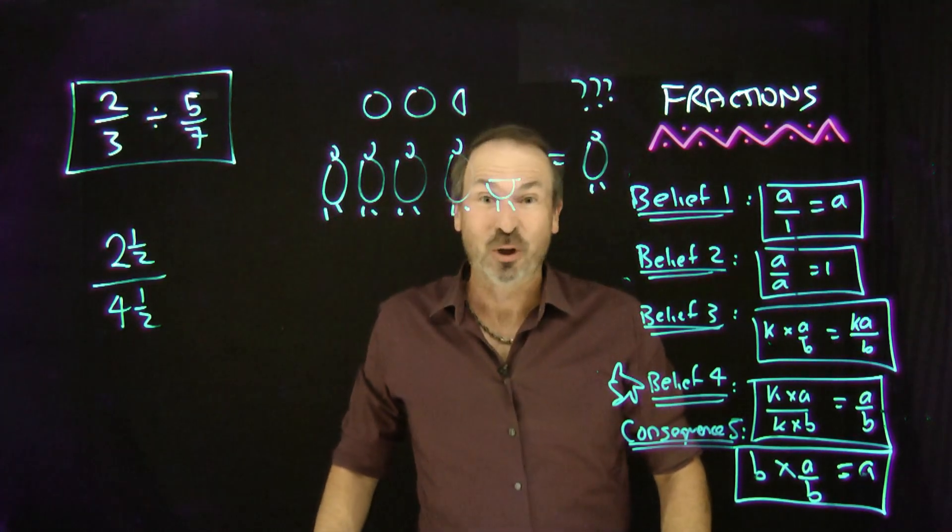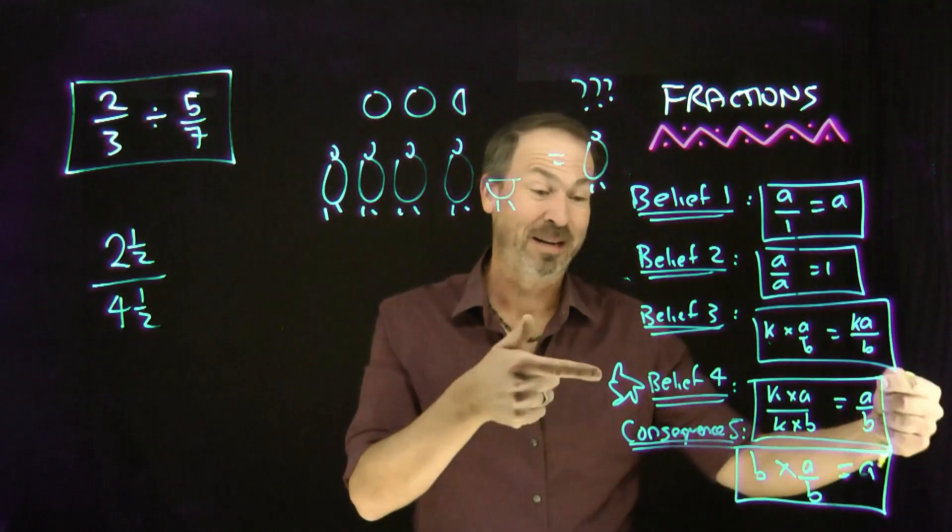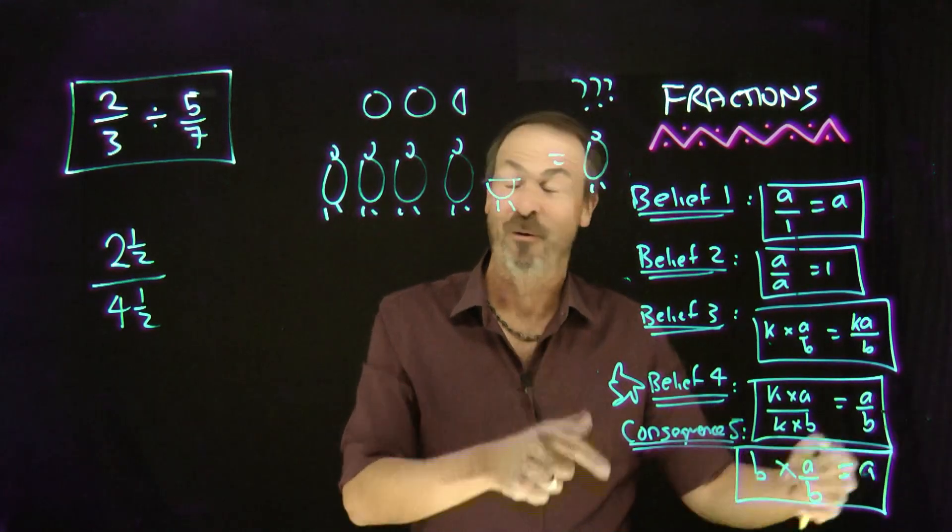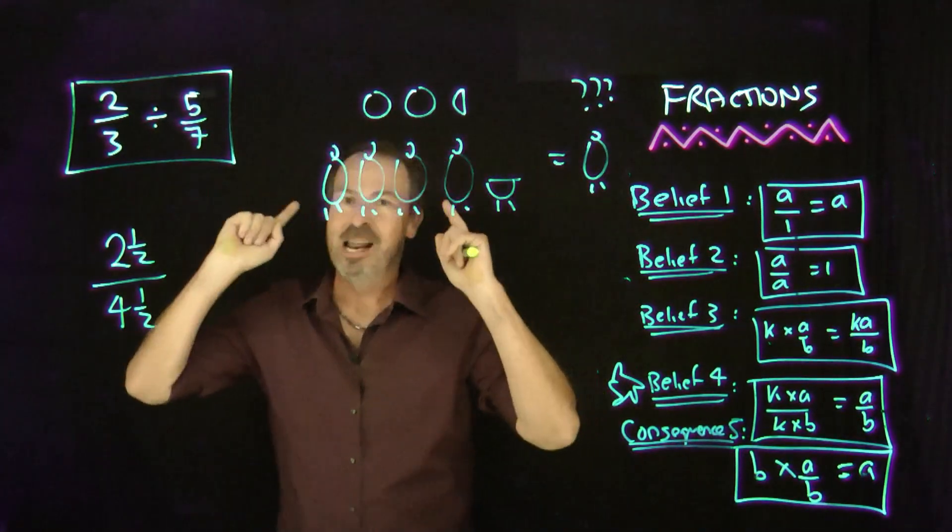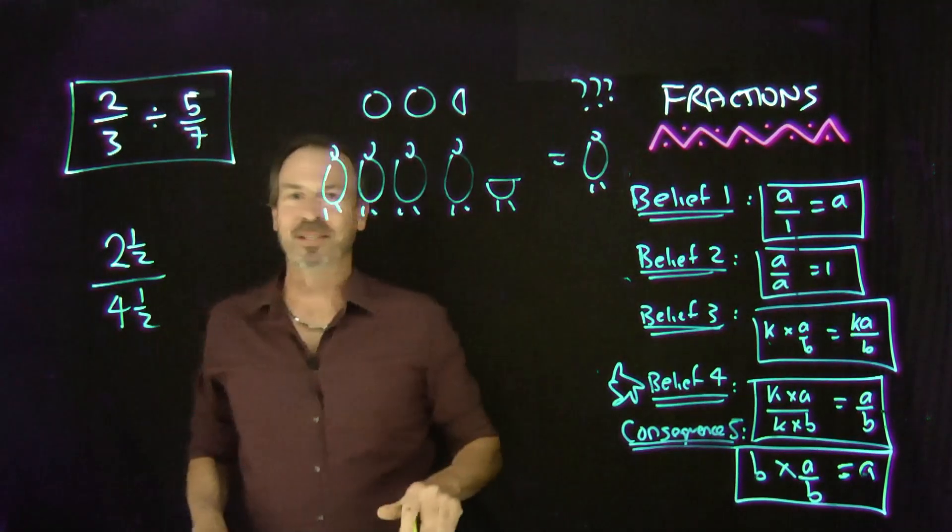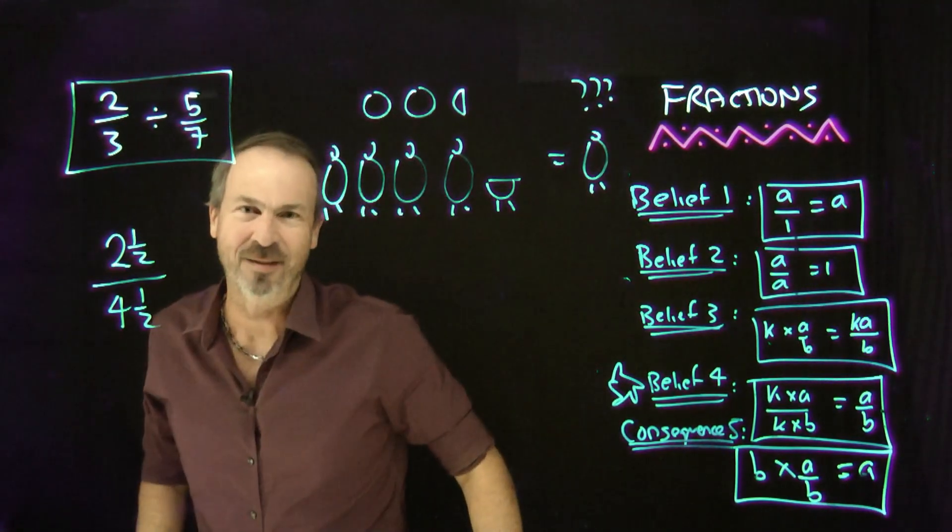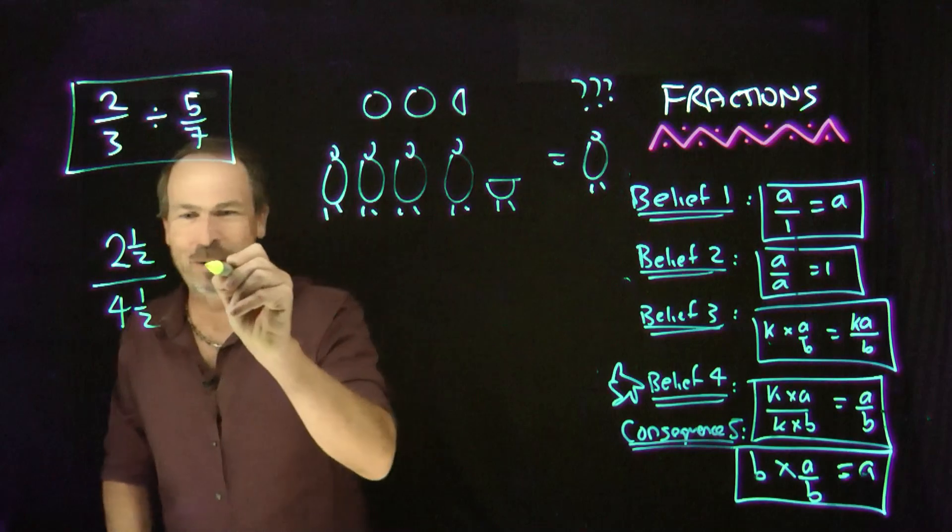Alright, but we have some tools at our disposal. Namely, these tools. Namely, this tool in particular, I like belief number 4. Because what I'm seeing here, what I don't like about this is all these mentions of halves. And one way to get rid of halves is to just double everything.